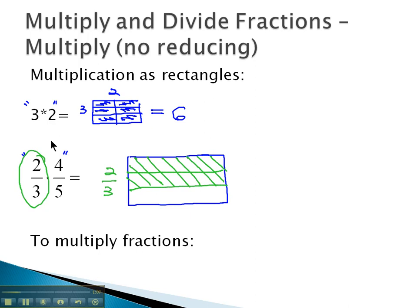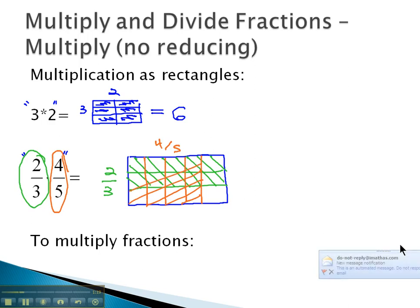And then the other dimension, 4 fifths, represents 4 fifths of the whole going the other way. So I'll divide that into 5 parts, and I'm going to shade 4 of them. And what you'll notice that does is we end up with this double shaded area that's going to be our product.